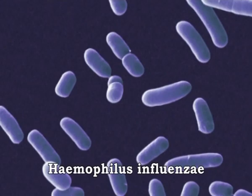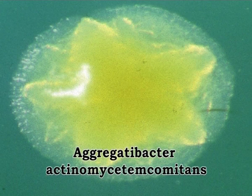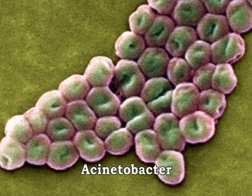A coccobacillus is a type of rod-shaped bacteria. The word coccobacillus reflects an intermediate shape between coccus, which is spherical, and bacillus, which is elongated. Coccobacilli rods are so short and wide that they resemble cocci. Haemophilus influenzae and Chlamydia trachomatis are coccobacilli. Aggregatibacter actinomycetemcomitans is a gram-negative coccobacillus prevalent in sub-gingival plaques.